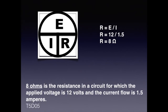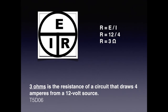In the next question, we are asked to solve for resistance given a current of 1.5 amps and 12 volts. Covering R on the chart, we see that R equals E divided by I. We plug in the values and divide 12 by 1.5, giving us 8 ohms. For the exam, know that 8 ohms is the resistance when the applied voltage is 12 volts and the current is 1.5 amperes. In the following question with 4 amps and 12 volts, dividing 12 by 4 gives 3 ohms. For the exam, know that 3 ohms is the resistance of a circuit that draws 4 amperes from a 12 volt source.